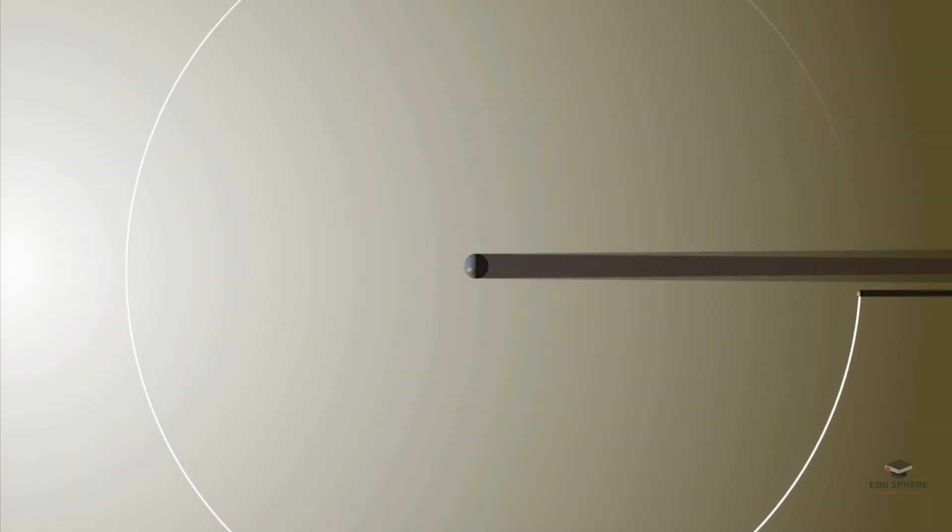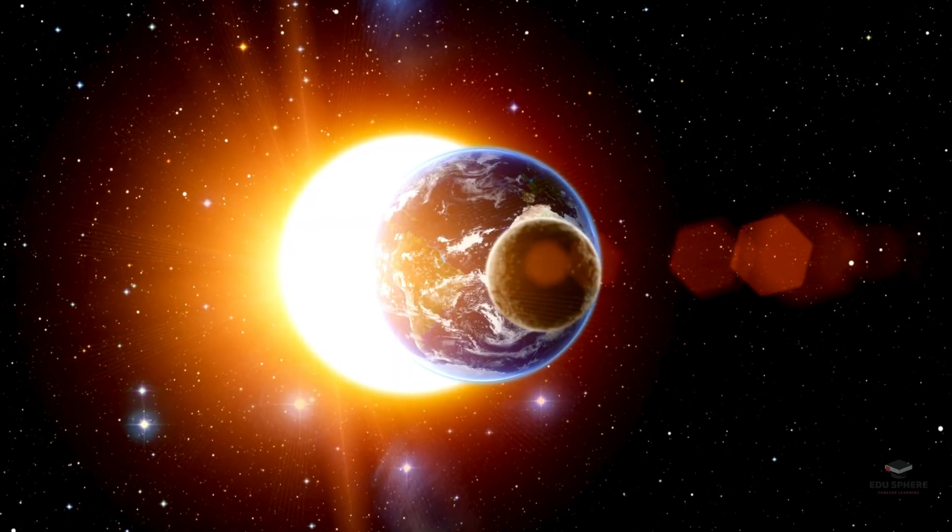Usually, a full moon has no eclipse because the moon orbits in a slightly different plane than the earth and the sun. However, sometimes these planes align just right.